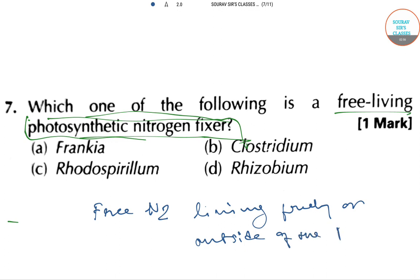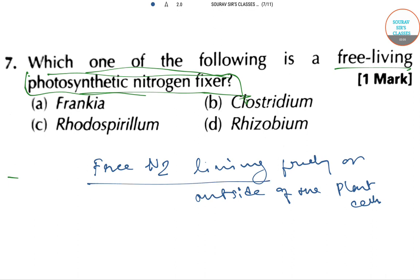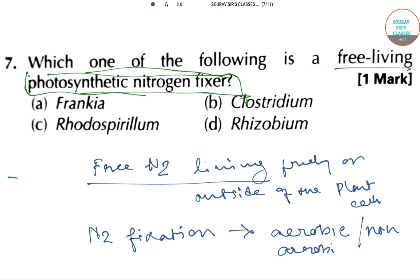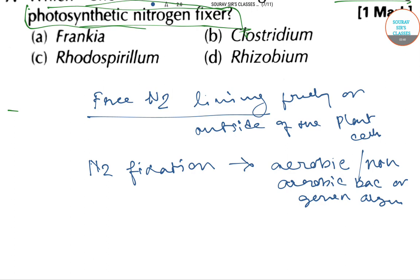The fixation of free nitrogen of the soil by microorganisms living freely or outside of the plant cell is performed by aerobic and non-aerobic bacteria or green algae. For free-living photosynthetic nitrogen-fixing bacteria, there are many, and one very common example is Rhodospirillum, and another is Chromatium.